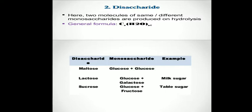As discussed earlier, the glycosidic bond or glycosidic linkage is a type of covalent bond that joins a carbohydrate molecule to another group. That other group may or may not be a carbohydrate. One more common example of a disaccharide is sucrose.